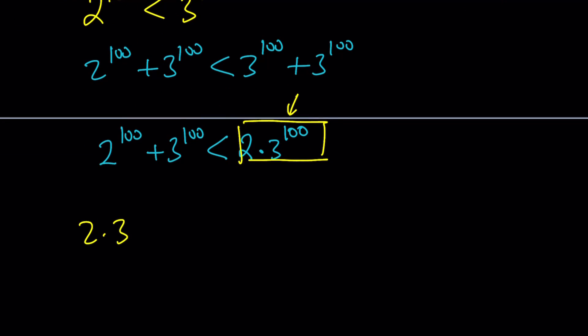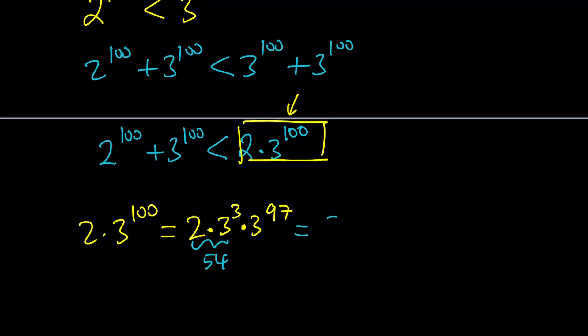2 times 3 to the power 100 can be written as 2 times 3 to the power 3, times 3 to the power 97. Notice that 3 to the power 3 is 27 and 2 times 27 is 54. So this can be written as 54 times 3 to the power 97.